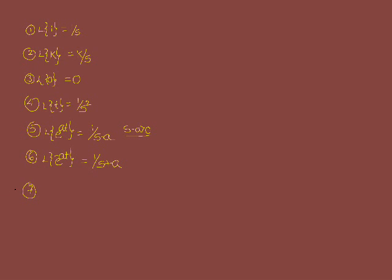Laplace of sin at is equal to a by s square plus a square. Similarly, Laplace of cos at is s by s square plus a square. So for sin at, the numerator is a; for cos at, the numerator is s — that you have to remember always.